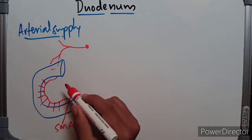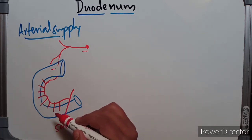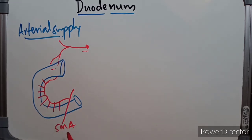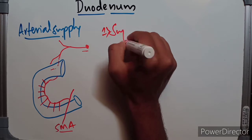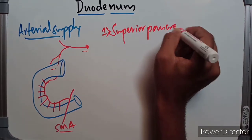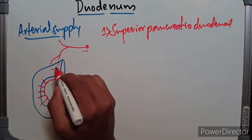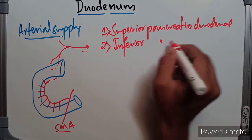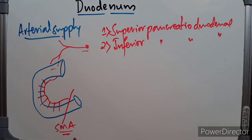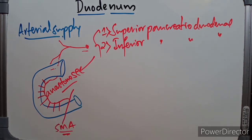The upper half of the duodenum develops from the foregut, which is why the upper half is supplied from the celiac trunk. The lower half of the duodenum develops from the midgut, so the supply of the lower half is from the superior mesenteric artery. The superior pancreaticoduodenal artery, a branch of the gastroduodenal artery, and the inferior pancreaticoduodenal artery, a branch of the superior mesenteric artery, anastomose to form the arterial arcade.